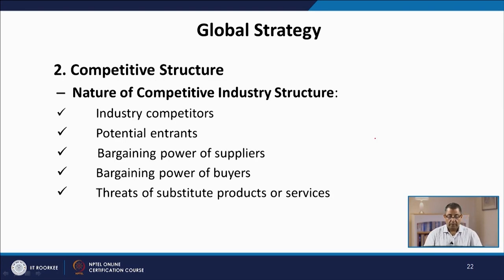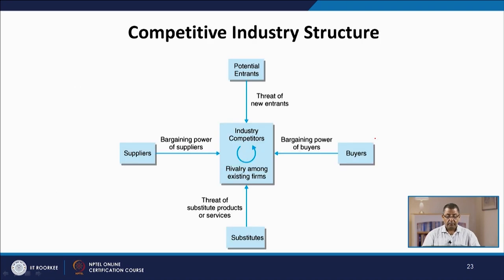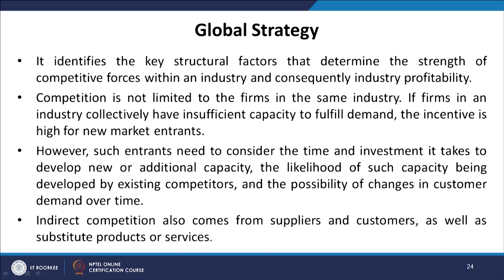The second conceptualization of global strategy is competitive structure, looking at the nature of competitive industry structure using Porter's 5 Forces model. These five forces are: industry competitors — rivalry among existing firms; threat of new entrants; bargaining power of suppliers; bargaining power of buyers; and threat of substitute products or services. This model identifies the key structural factors that determine the strength of competitive forces within an industry and consequently industry profitability.